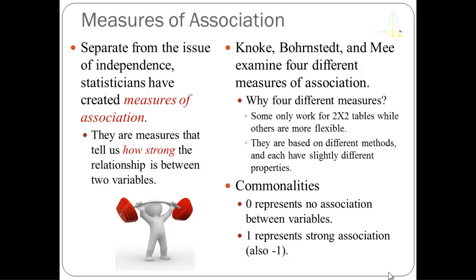Why do we have so many measures of association? Some of them are only appropriate for particular kinds of data. For example, Yule's Q is only appropriate when you have a two-by-two cross tabulation table. Some measures are better for larger tables, and finally some measures have different statistical properties that are appropriate to different kinds of problems.